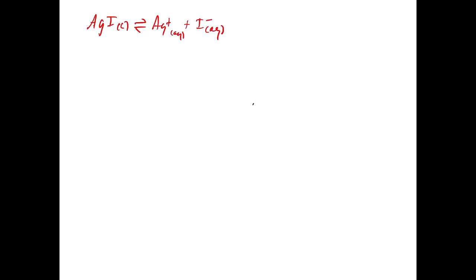So if we want to create, and we have our Ksp expression for this, that's going to equal silver plus times the concentration of I minus. So as we normally do with these problems, the first thing we go to is an ICE table to help us figure out how to account for the stoichiometry.